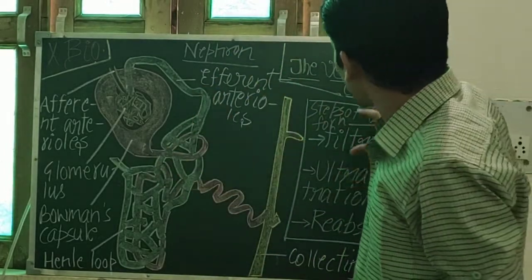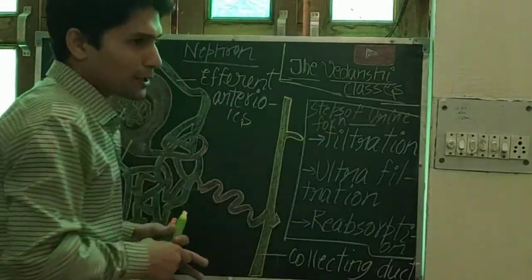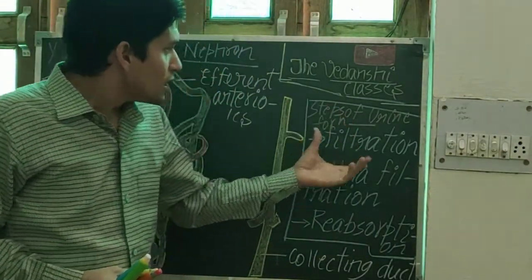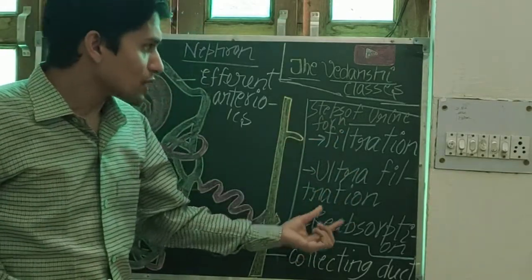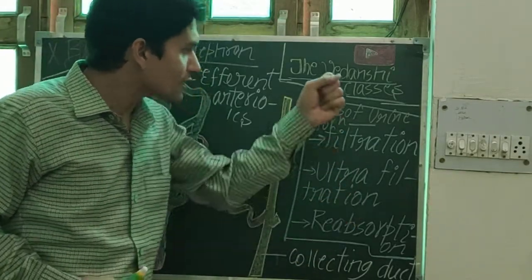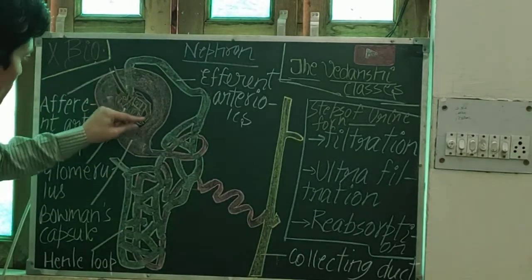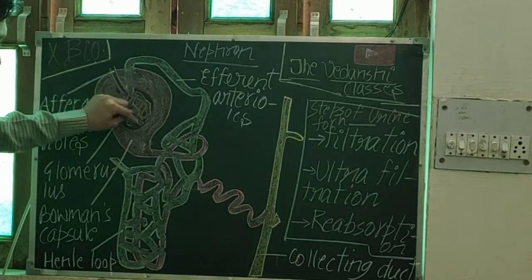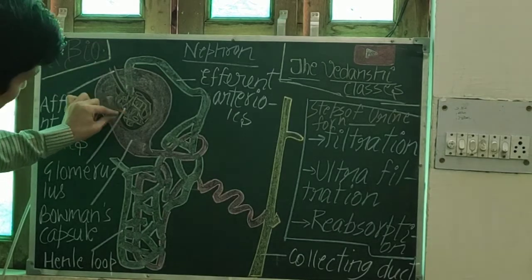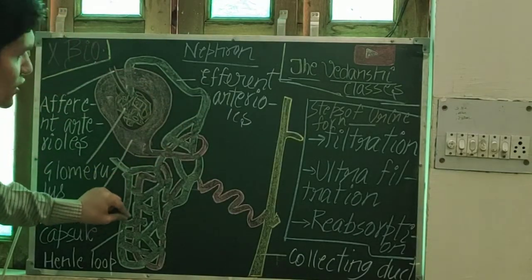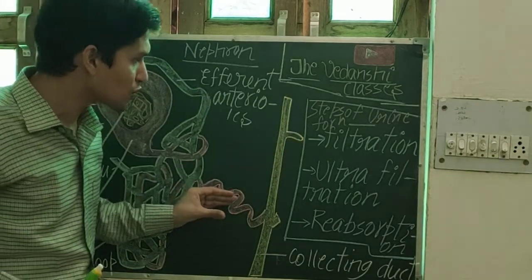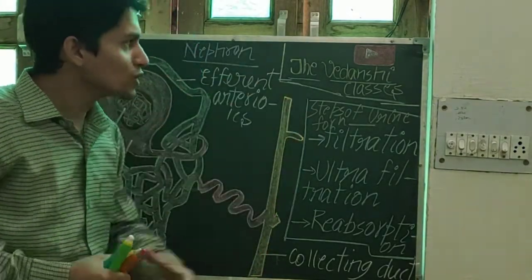If we talk about the steps of urine formation — urine is the liquid waste product of the human body. The process involves filtration, ultra-filtration, and reabsorption. In the glomerulus, blood filtration occurs first. Then there is ultra-filtration, then reabsorption, and finally the collecting duct collects the urine.